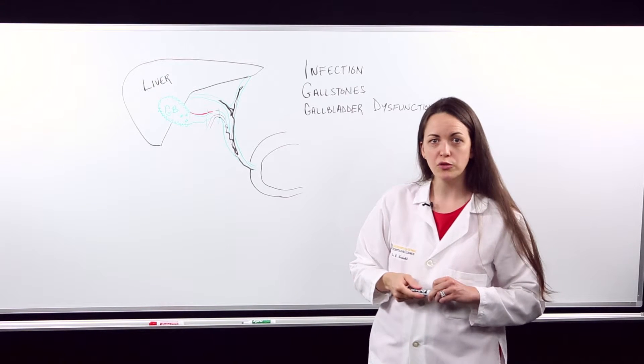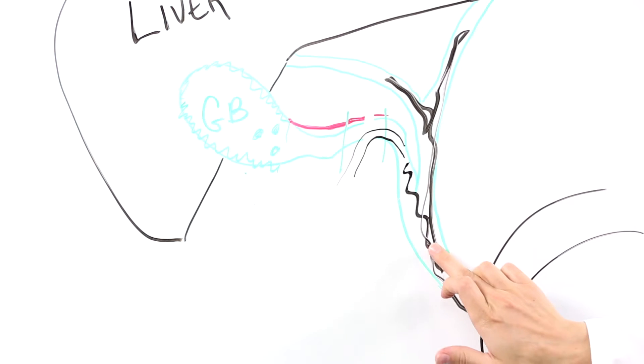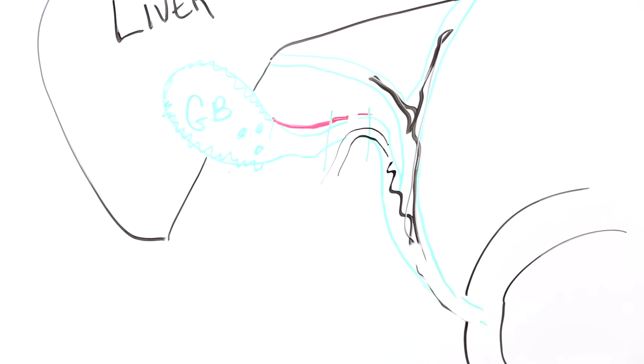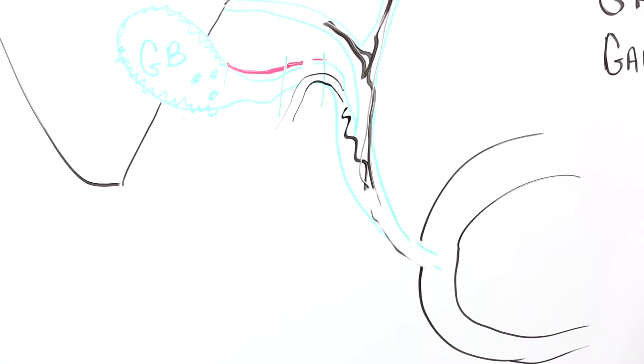An intraoperative cholangiogram might also be performed to ensure that there's no blockage of the ducts. So if you put the x-ray dye in and there was a stone blocking, you would see that the dye couldn't travel all the way down the bile ducts.